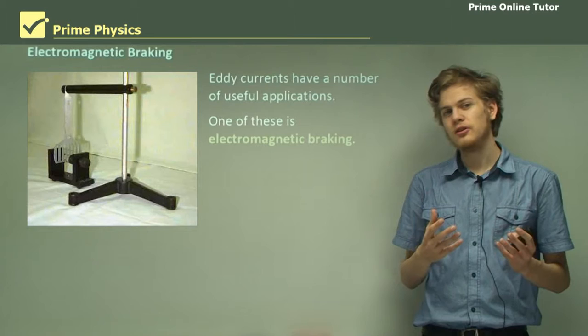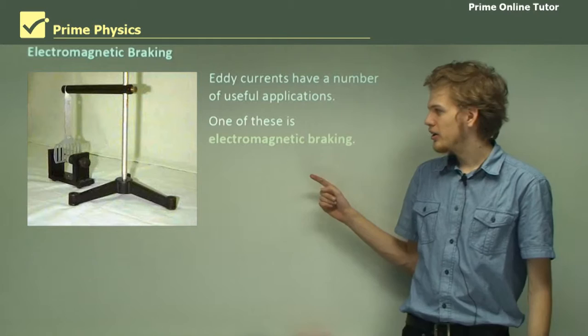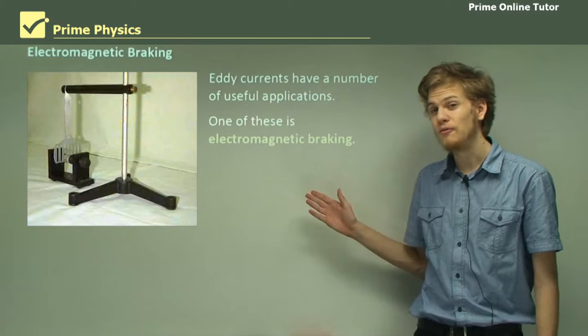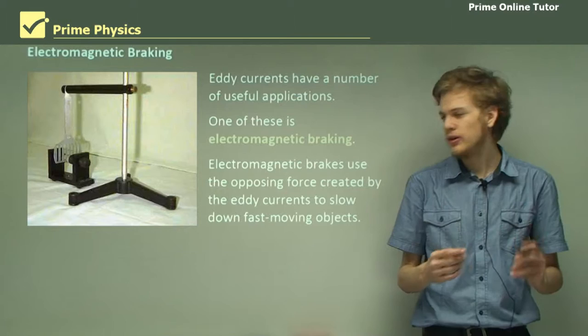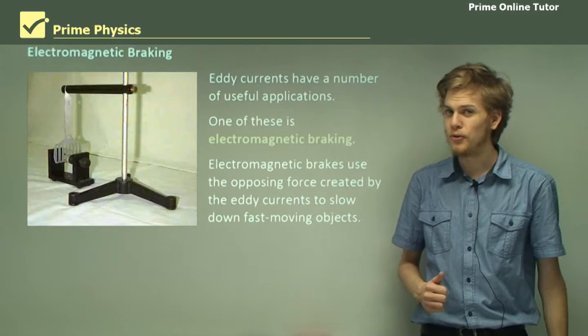One of the experiments you can do in a school laboratory to demonstrate electromagnetic braking is swinging a metal pendulum in between a magnetic field, as we can see in a photograph over here. Electromagnetic brakes use the opposing force created by eddy currents — that's Lenz's law — eddy currents create opposing forces, and they use these forces to slow down fast moving objects.